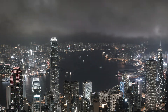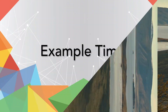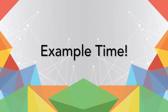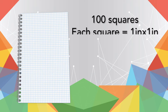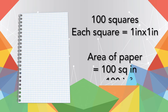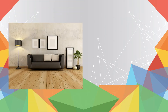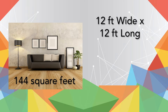Here are some examples that will help put area into perspective. You may have worked with grid paper — grid paper has lines and squares drawn on it. A typical sheet of grid paper is 100 squares, meaning it takes 100 squares to cover the area inside its boundaries. If each square is one inch by one inch, then the area of the paper is 100 square inches. The area of a small room in a house might be 144 square feet — if the room is square, then it is 12 feet wide by 12 feet long.